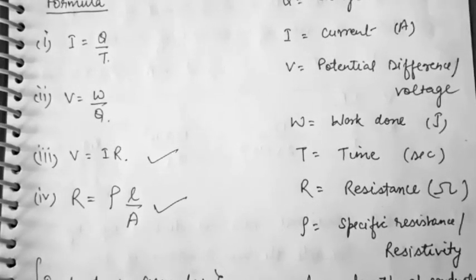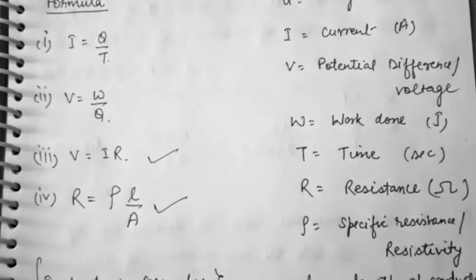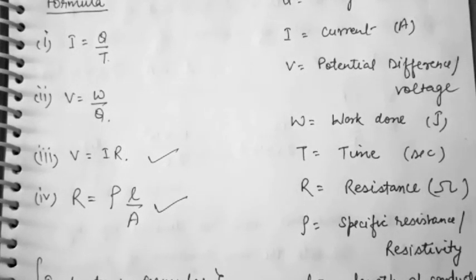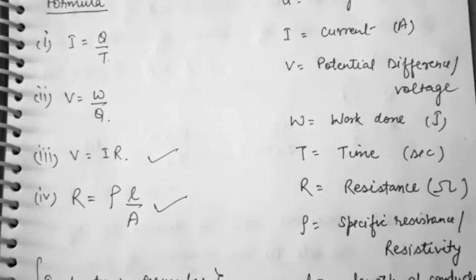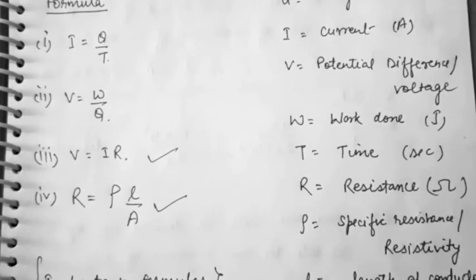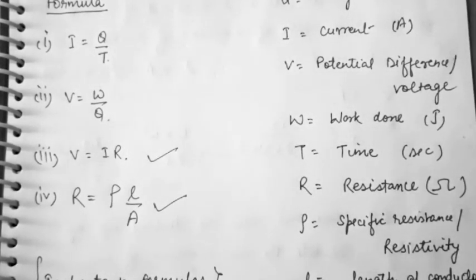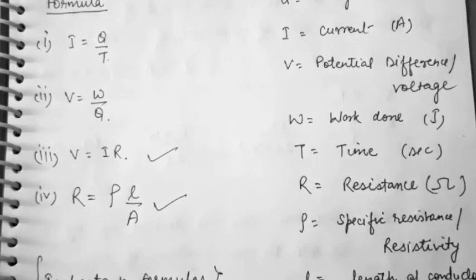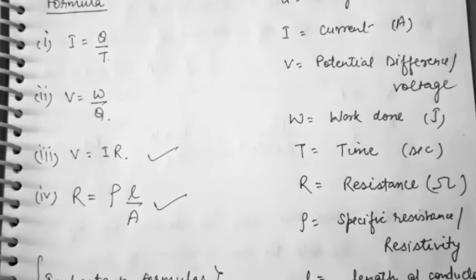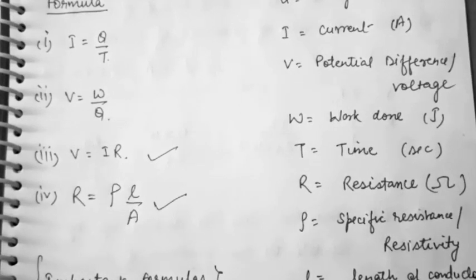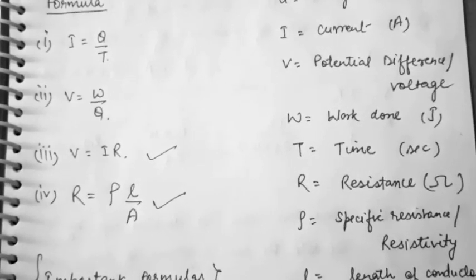The third is Ohm's law, which says that under constant physical conditions like temperature and pressure, voltage is directly proportional to the current. So V = IR. The last formula is R = ρL/A, which says that resistance is directly proportional to length and inversely proportional to cross section area.